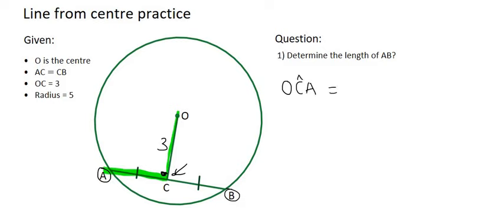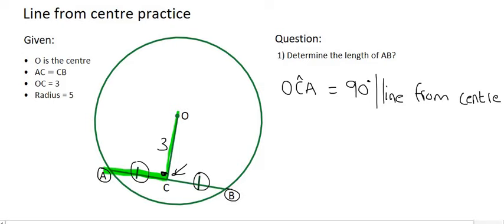What should that angle equal? Well done if you said 90 degrees, because Euclid found out that if you have a line coming from the center of a circle and it hits the chord exactly in half—we know it's in half because AC equals CB—then it automatically forms an angle of 90 degrees. The reason is because we have a line from the center going to the midpoint of the chord.